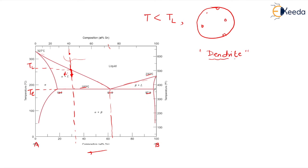Dendrite is a tree-like structure — it is again a Greek word meaning tree-like structure. Most of the casted products will show this dendritic microstructure. It is very simple to form, also very simple to nucleate and grow — dendritic is a very common structure. As soon as we drop the temperature below Tl, alpha is going to be nucleated and it starts growing in the dendritic fashion.